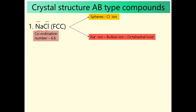The coordination number in NaCl: Na+ occupies octahedral void, so the coordination number of octahedral voids is 6. Automatically, the coordination number of both ions becomes 6×6. First digit indicates coordination number of cation, second digit indicates coordination number of anion. So coordination number of NaCl is 6×6.